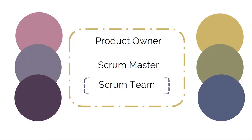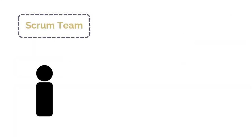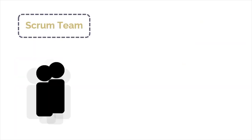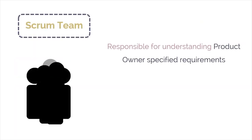Finally, it's the turn of the Scrum team — they actually do the work. The Scrum team is the group of people responsible for understanding the requirements specified by the product owner and creating the deliverables of the project. Considering the earlier example, the software development team, either with newly recruited experts or with newly acquired training, will proceed in accordance with the requirements set by the product owner.